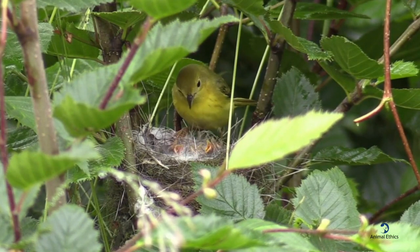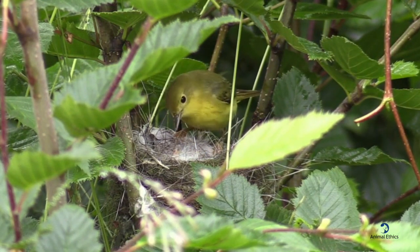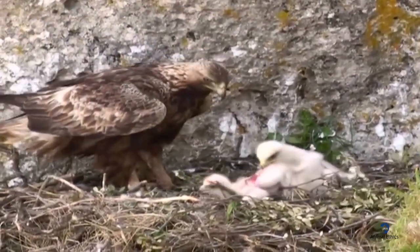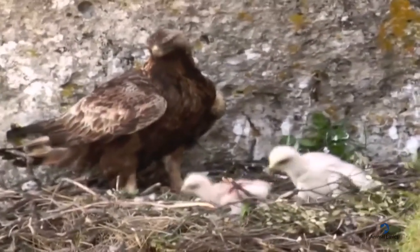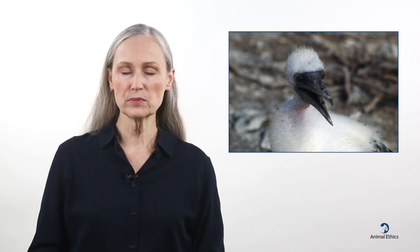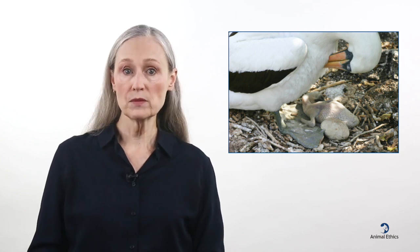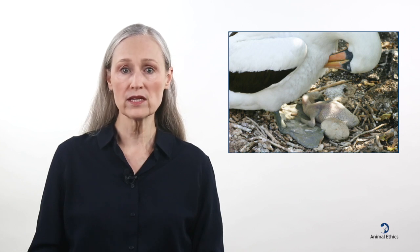Whenever an animal has multiple offspring at once, there is the potential for sibling rivalry. Food and parental attention are limited. In situations where the resources available aren't sufficient, either because of poor environmental conditions or the large size of the brood, siblings have to compete with each other for the resources they require. Siblicide is frequently observed in birds. Nazca boobies are large seabirds, and the chicks almost always engage in siblicide. The mother lays one or two eggs in each clutch. The first chick is usually born around five days before the second, and almost invariably kills the younger sibling by dragging him from the nest.